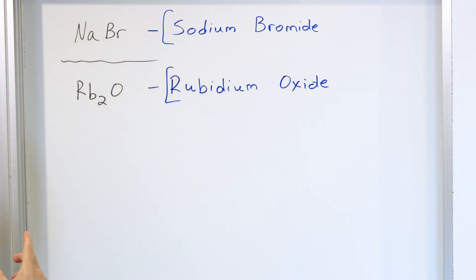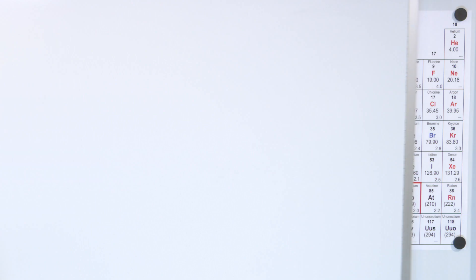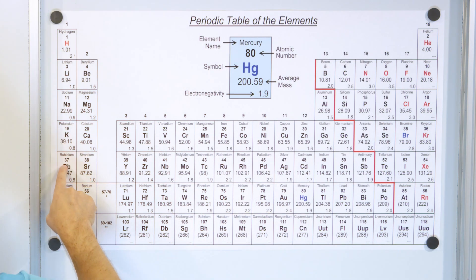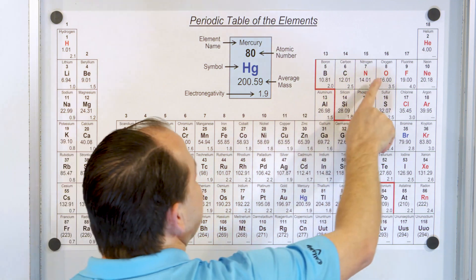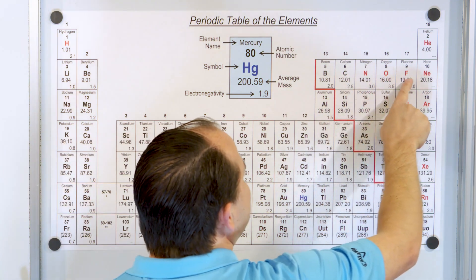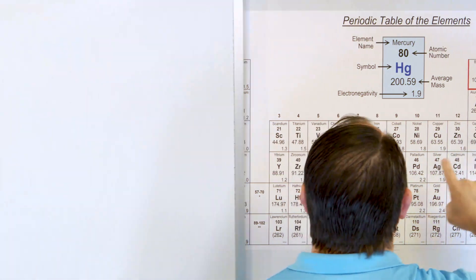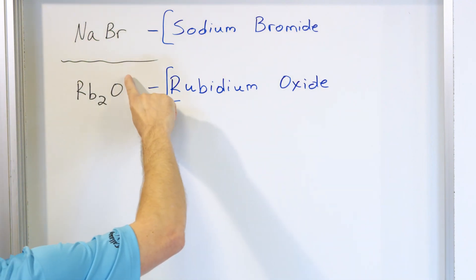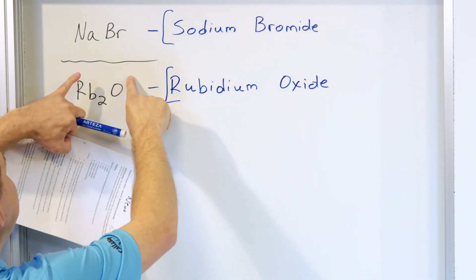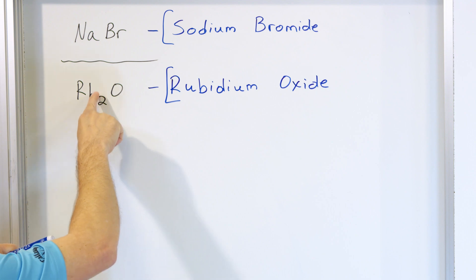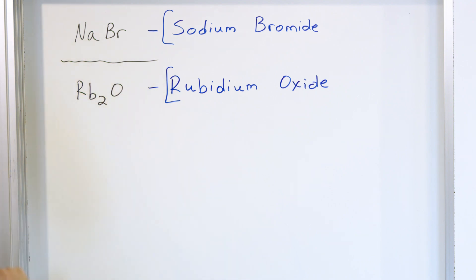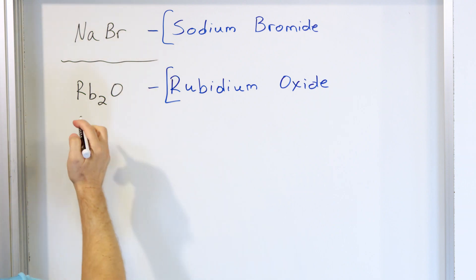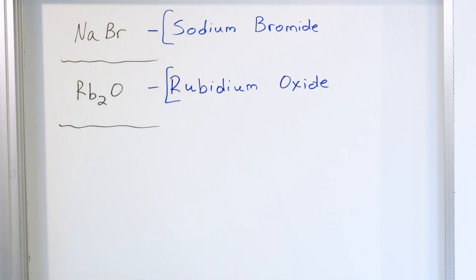Let's double check and see if it makes sense. Rubidium should have a charge of plus one since it's in this column, and oxygen should have a minus two trying to gain two electrons. So if this is a plus one and this is a minus two, when we do the crisscross, the two comes here and the one comes here — and that's exactly what we have. So it makes sense that this is the ionic compound formed by those two elements.